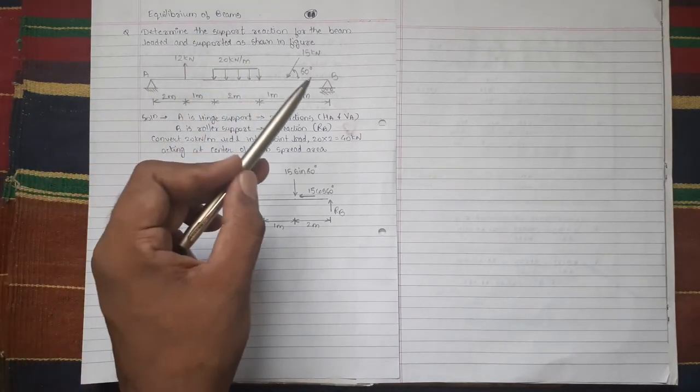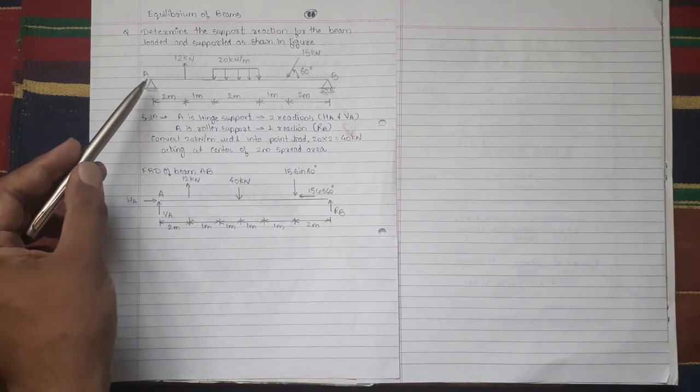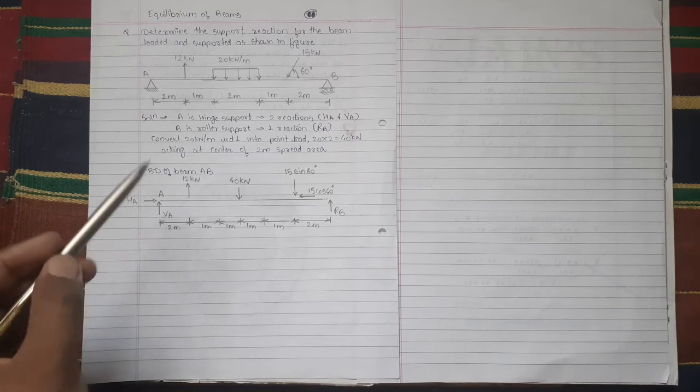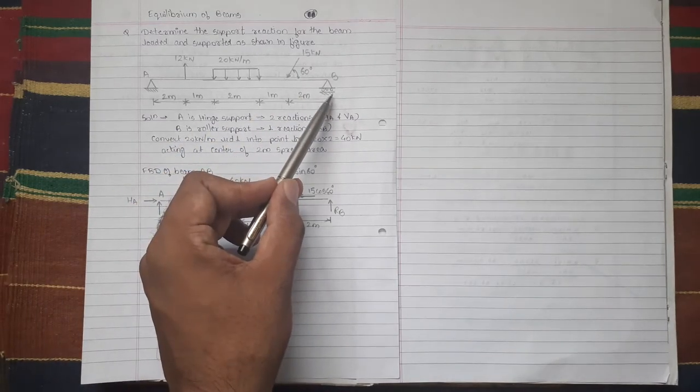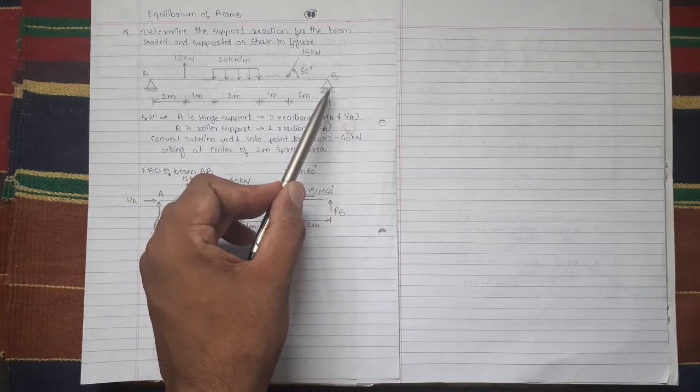In this figure, beam AB is loaded. At joint A there is a hinge support with two reactions HA and VA. At joint B is a roller support with one reaction RB perpendicular to the plane of the roller.